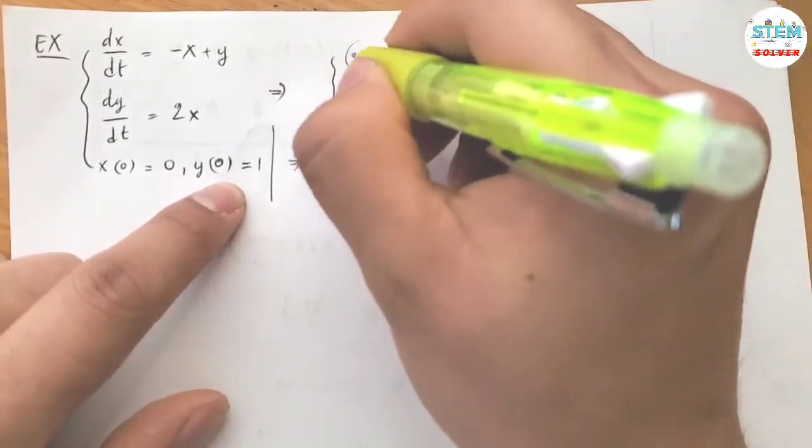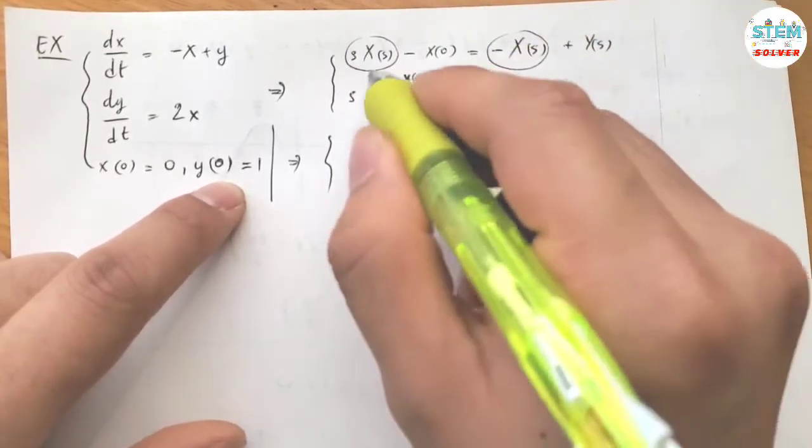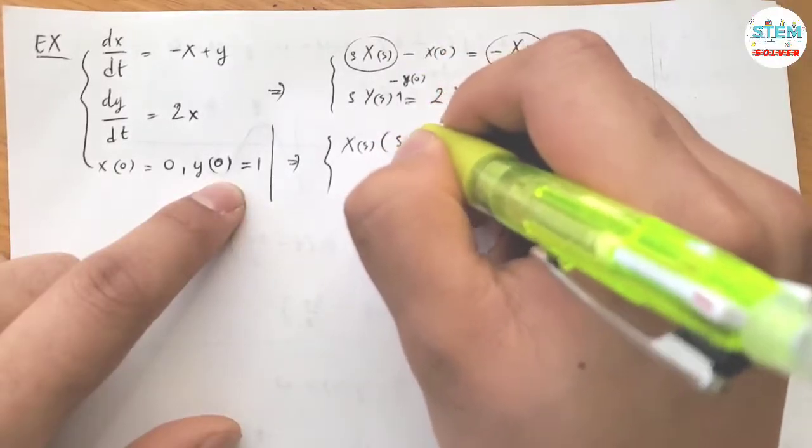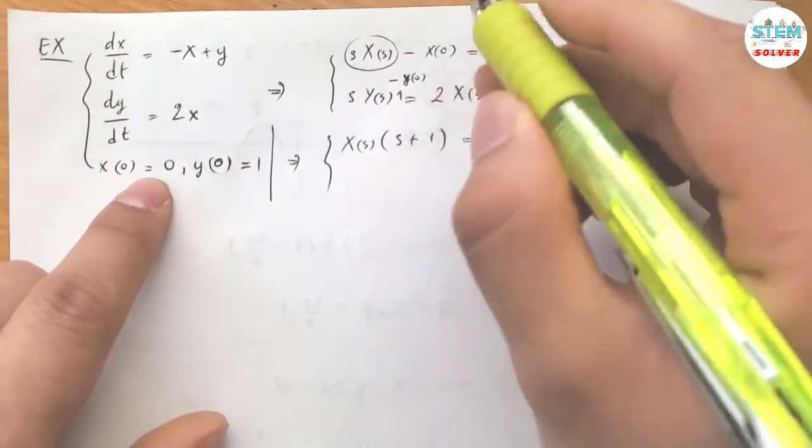So X of S and X of S, move it to one side and factor it out.